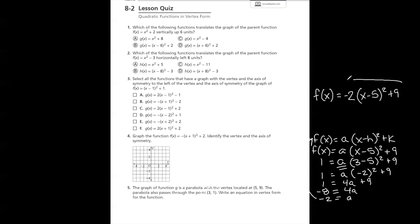Plugging a equals negative 2 back into the equation, the final answer in vertex form is f of x equals negative 2 times (x minus 5) squared plus 9. Hope that helps — thank you.